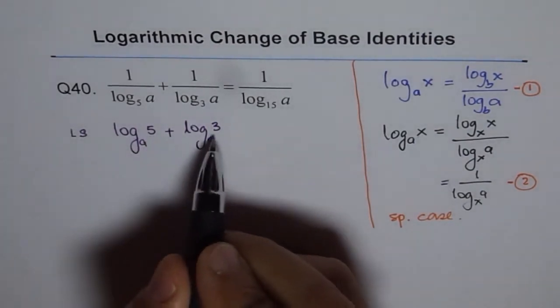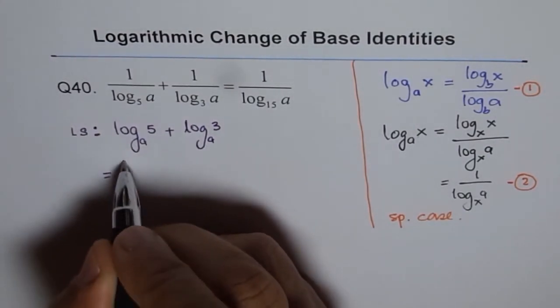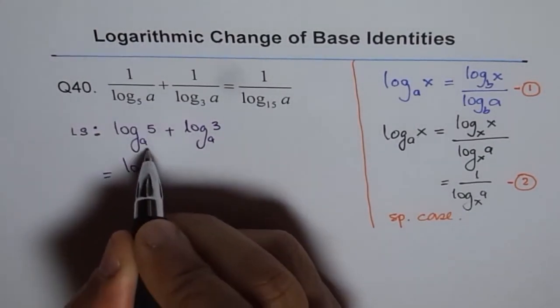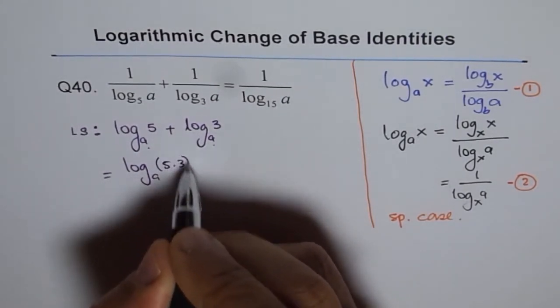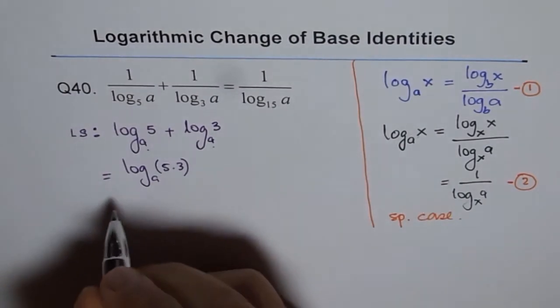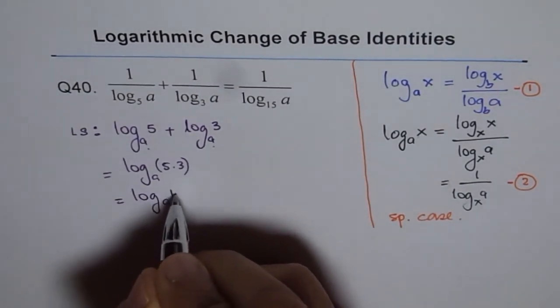Now we can apply the product formula. The left side equals log to the base a. We got the same base, so we can multiply 5 times 3, which is 15. This can be written as log_a(15).